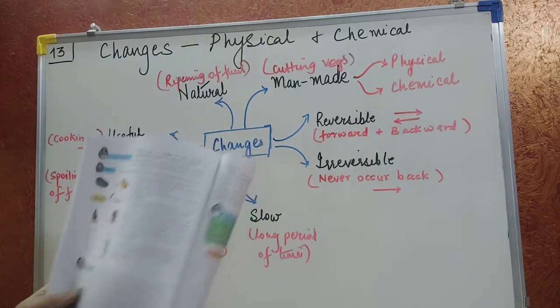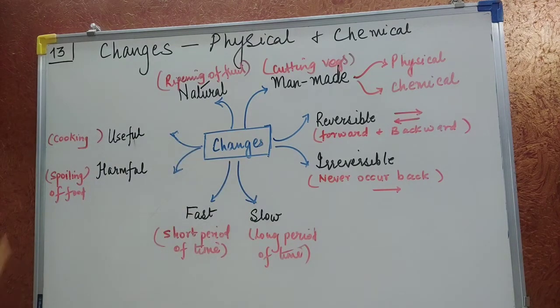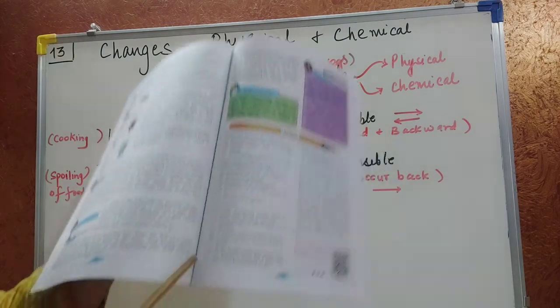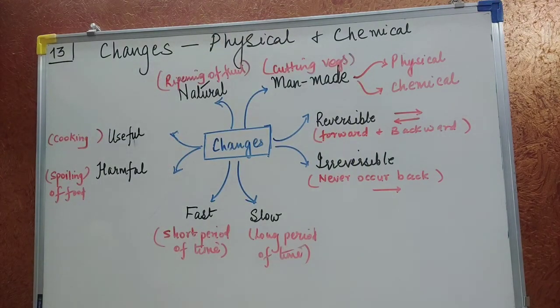Raw mango becomes ripe mango. Now ripe mango cannot come back to raw mango. So it is a permanent change. So this is what it is there in this chapter. Only the terminologies. You just have to understand the terminology. Whatever question answers are there in my life sessions I will be giving it to you. Thank you.